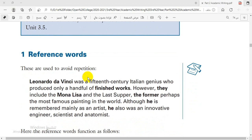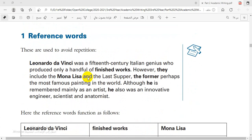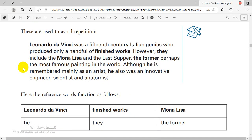So let's now define what is the meaning of reference words. Reference words, these are used to avoid repetition. For example, let us read this text and know what is meant by reference words. Leonardo da Vinci was a 15th century Italian genius who produced only a handful of finished works. However, they include the Mona Lisa and the Last Supper, the former perhaps the most famous painting in the world. Although he is remembered mainly as an artist, he also was an innovative engineer, scientist, and anatomist.